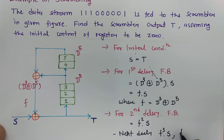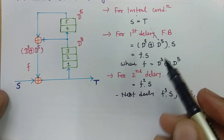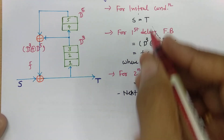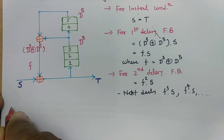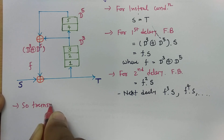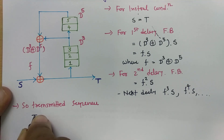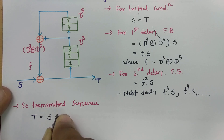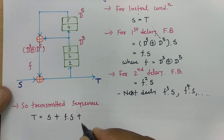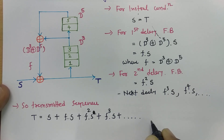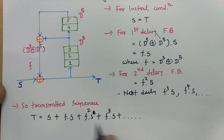So that is how it will keep on increasing. You will be finding your transmitted sequence t, which will be the algebraic addition of all feedbacks. So the transmitted sequence t equals s plus first feedback f·s, plus next feedback f²·s, plus f³·s, plus f⁴·s, and so on. So this will be our transmitted sequence.